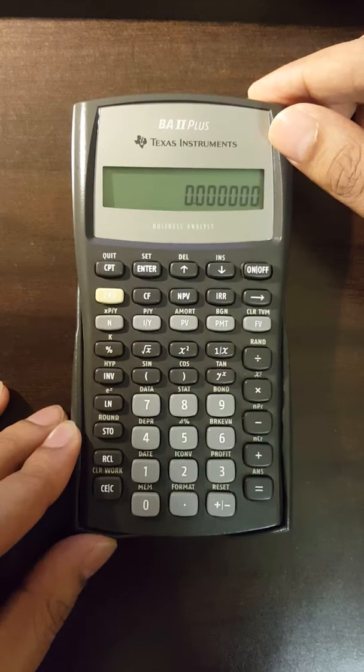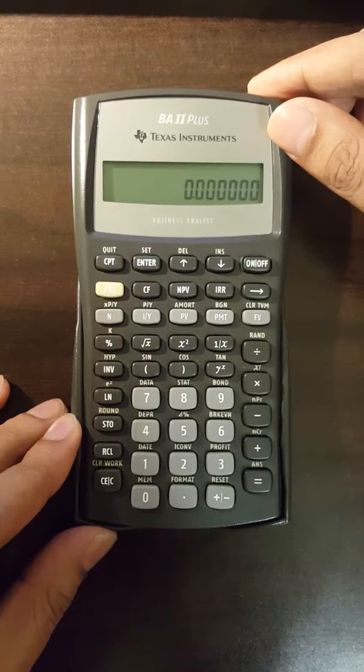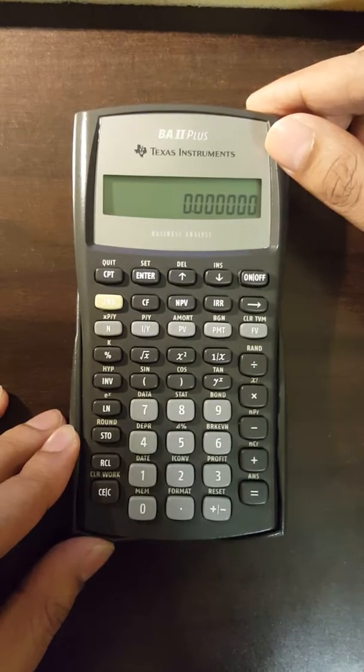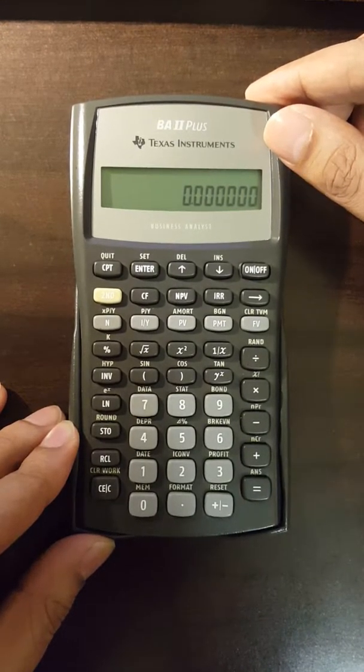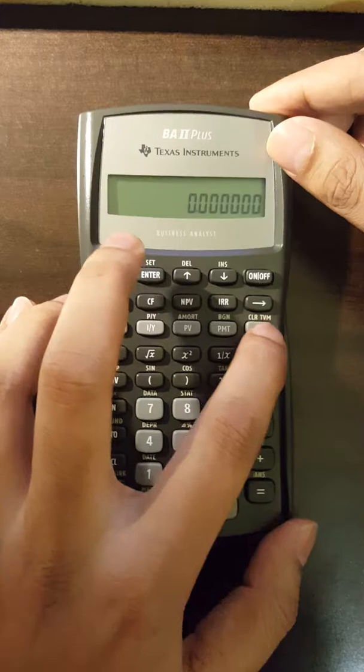As we did in example 3, we will handle each cash flow separately here. And we have to remember to clear the TVM registers after every step, which is the second clear TVM keys.